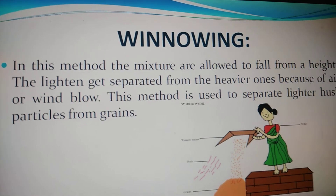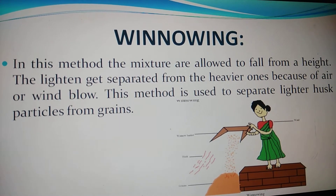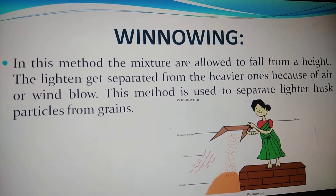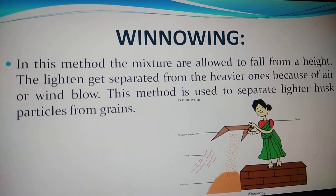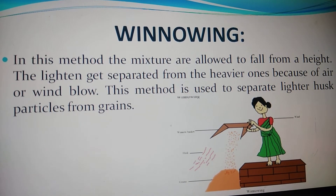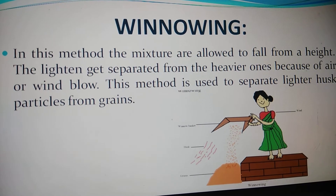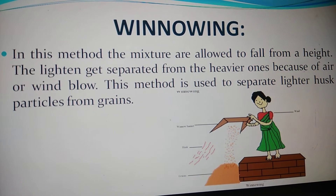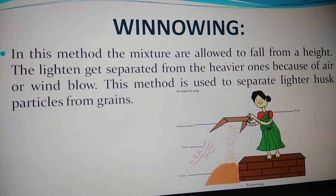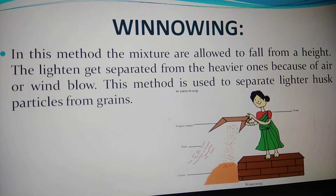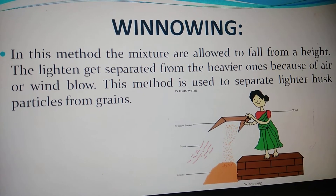The third process is winnowing. Winnowing is the process in which husk is separated from the grains by using air or a wind-blow method. The grains are allowed to fall from a height, and the lighter husk particles get separated as wind blows them to a shorter distance. Two separated heaps are formed: the heavier components fall down closer, and the lighter components blow away at a distance.